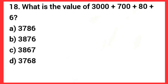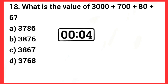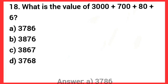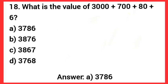Next one: What is the value of 3,000 plus 700 plus 80 plus 6? Answer: Option A — 3,786.